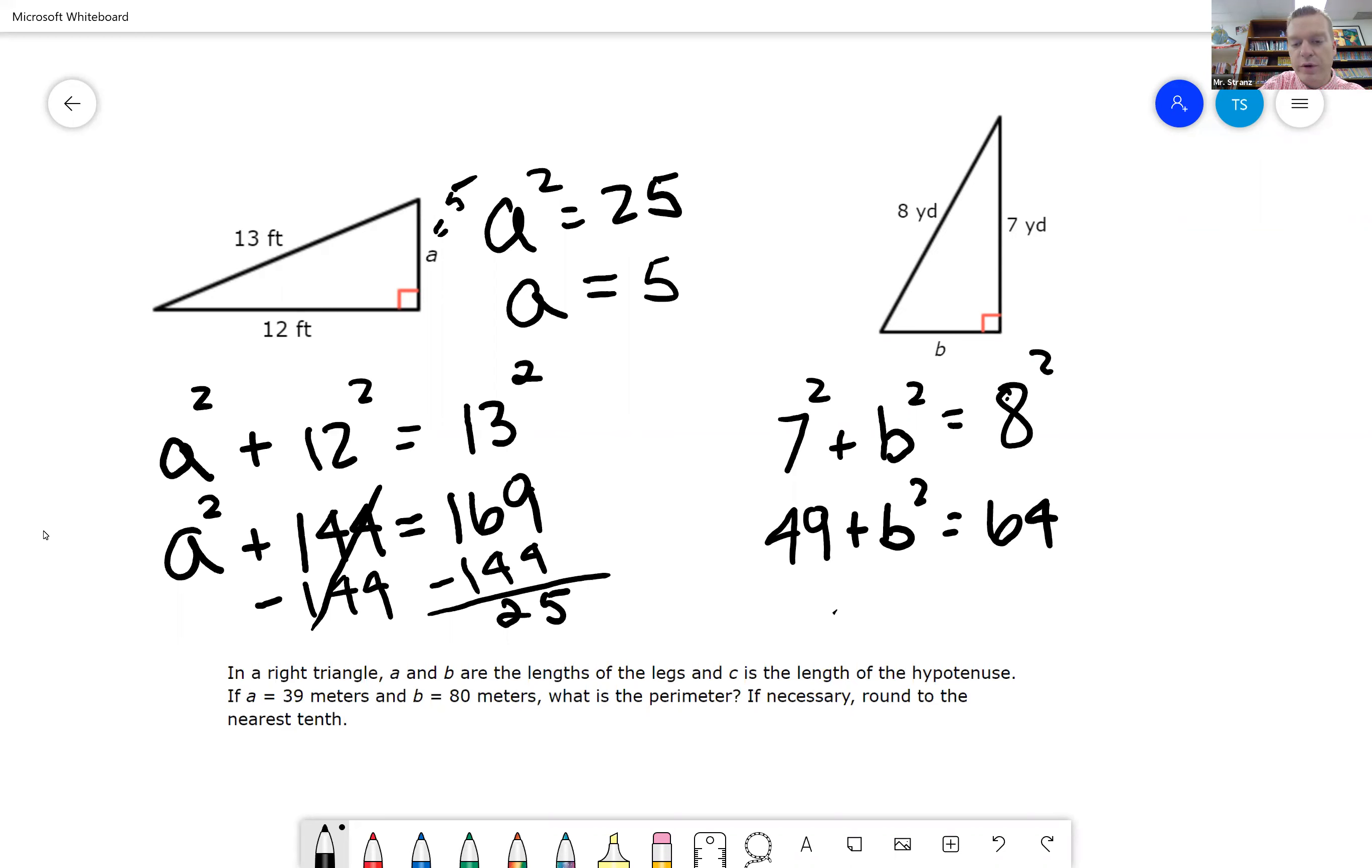I need to get B by itself to figure out what that is, so I'm going to subtract 49 from this side, subtract 49 from this side. 64 minus 49, right, is going to be,